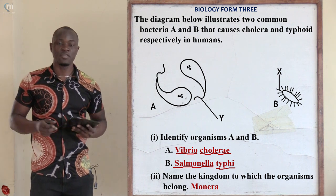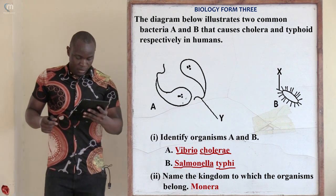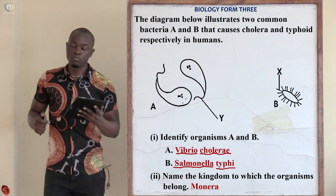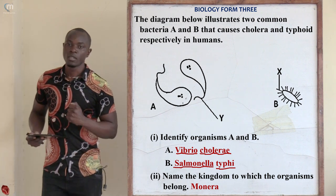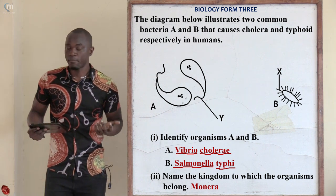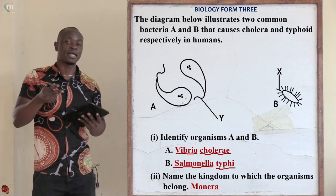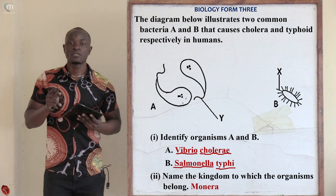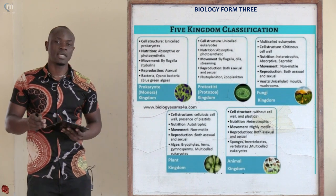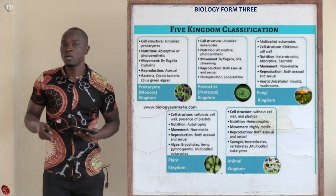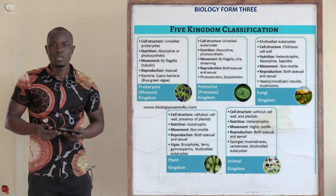The next part asks: name the kingdom to which the organisms belong. These organisms belong to Kingdom Monera because they are bacteria. All bacteria belong to Kingdom Monera.